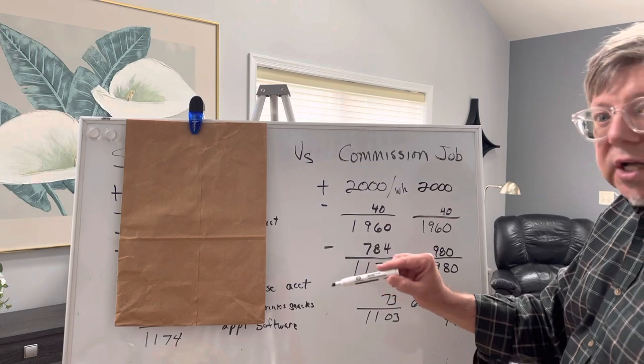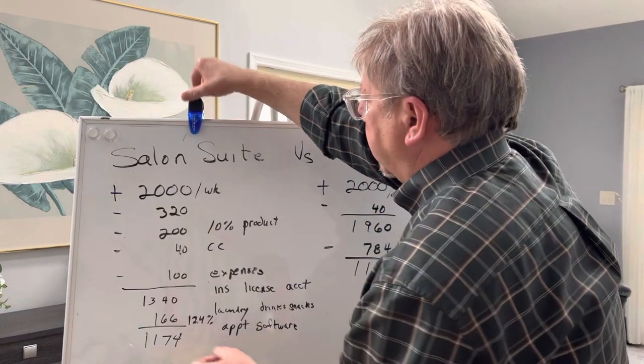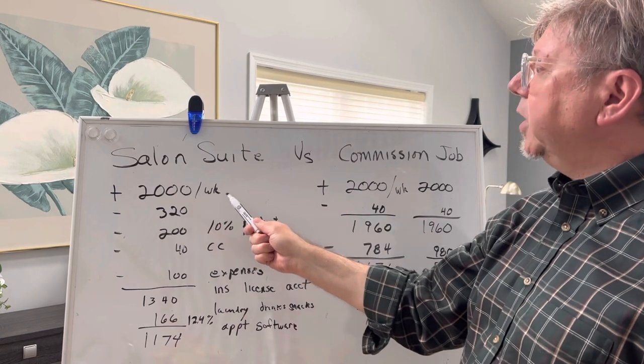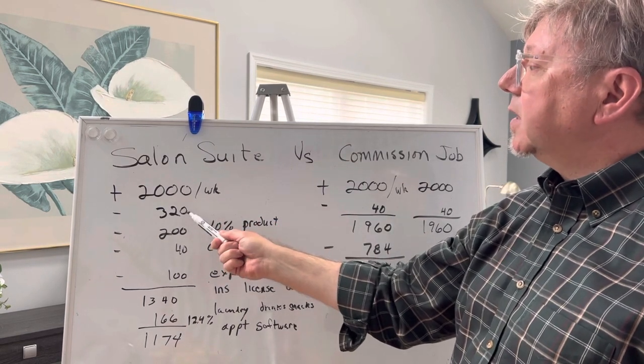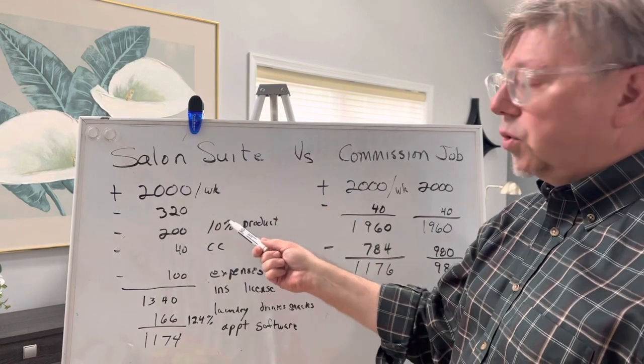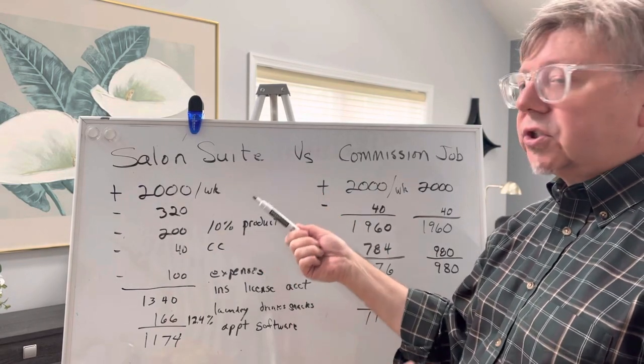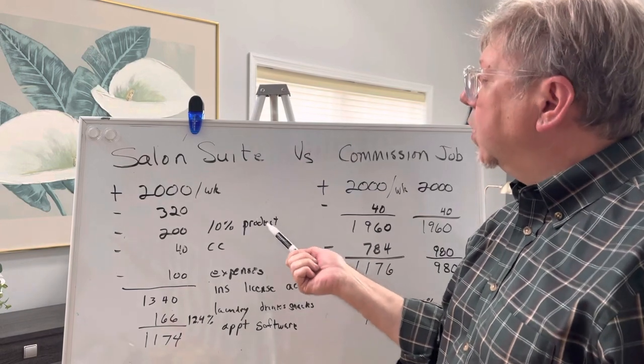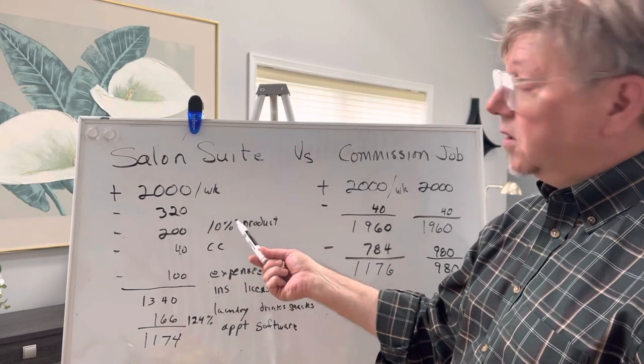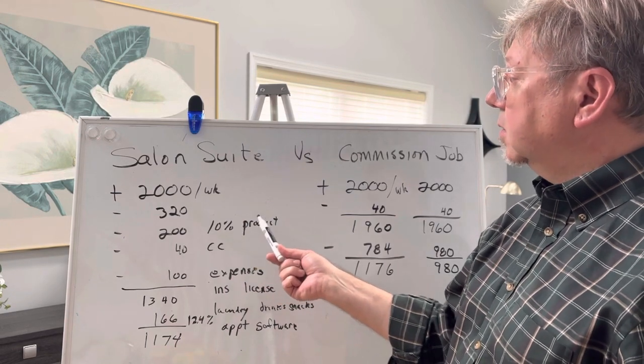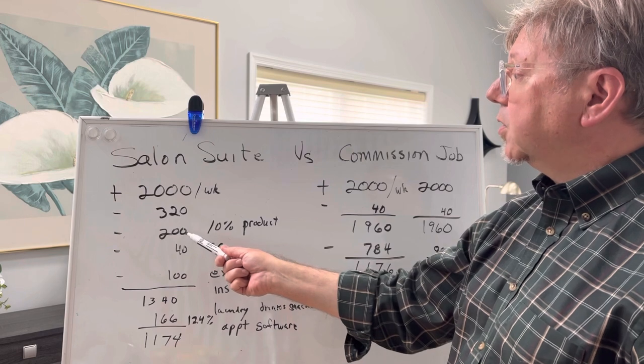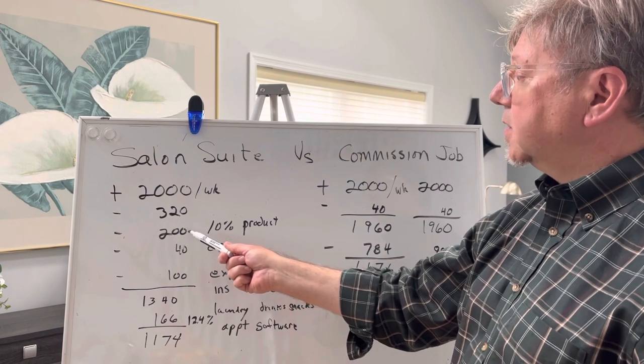Now let's look at the salon suite with the same amount of income, $2,000 per week. In this case, the rent is $320 per week. You'll be paying for your own shampoos and conditioners and hair color and foil and all of that. And we're going to use a low 10% of your service sales. So $200 is an expense for your products.